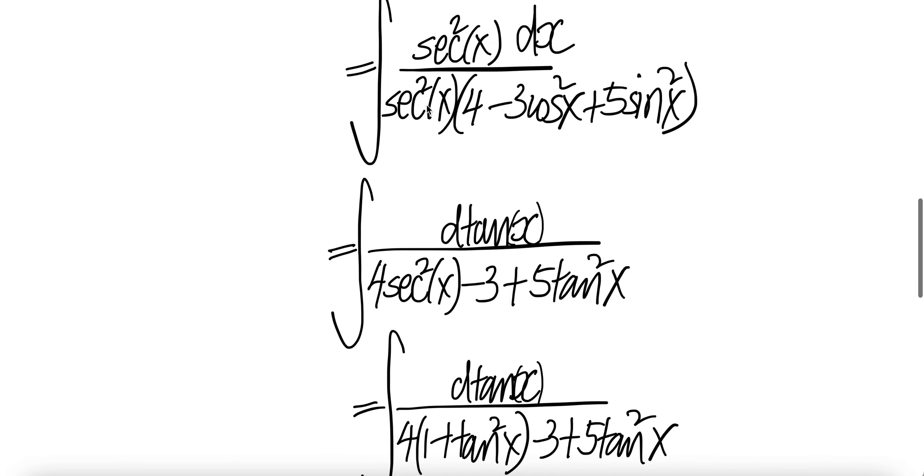Let us distribute this in. With 4, you get 4 sec square x. With this, you get negative 3 because sec square x is 1 over cosine square x. They cancel.